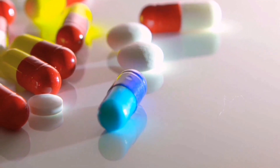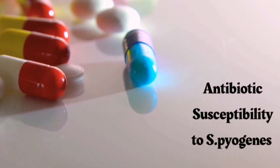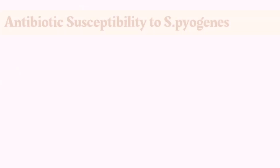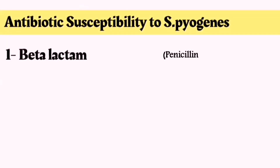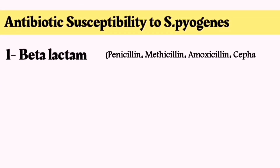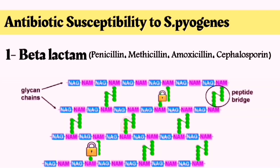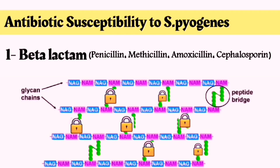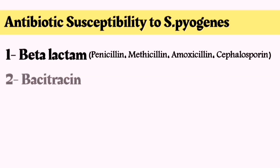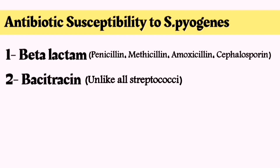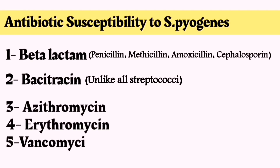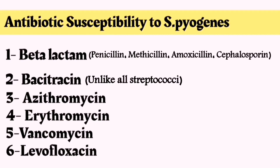In terms of antibiotics that can kill and inhibit the growth of S. pyogenes, it is well known that the beta-lactam group, which includes penicillin, methicillin, amoxicillin and cephalosporin, are highly effective. This is because they have a direct effect on the thick peptidoglycan layer present in gram-positive bacteria. Unlike the rest of the streptococci, S. pyogenes shows high susceptibility towards bacitracin, azithromycin, erythromycin, vancomycin and levofloxacin.